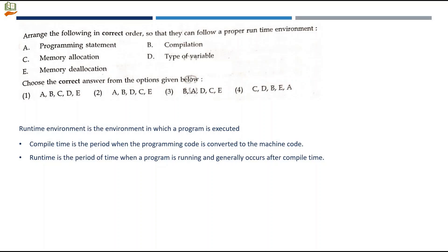The question is about in which order if we arrange all these options, we can follow a proper runtime environment. There are two interpretations to this question. Generally in a runtime environment, the first process that takes place will be compilation. When you want to run a C program, the first task will be compilation.